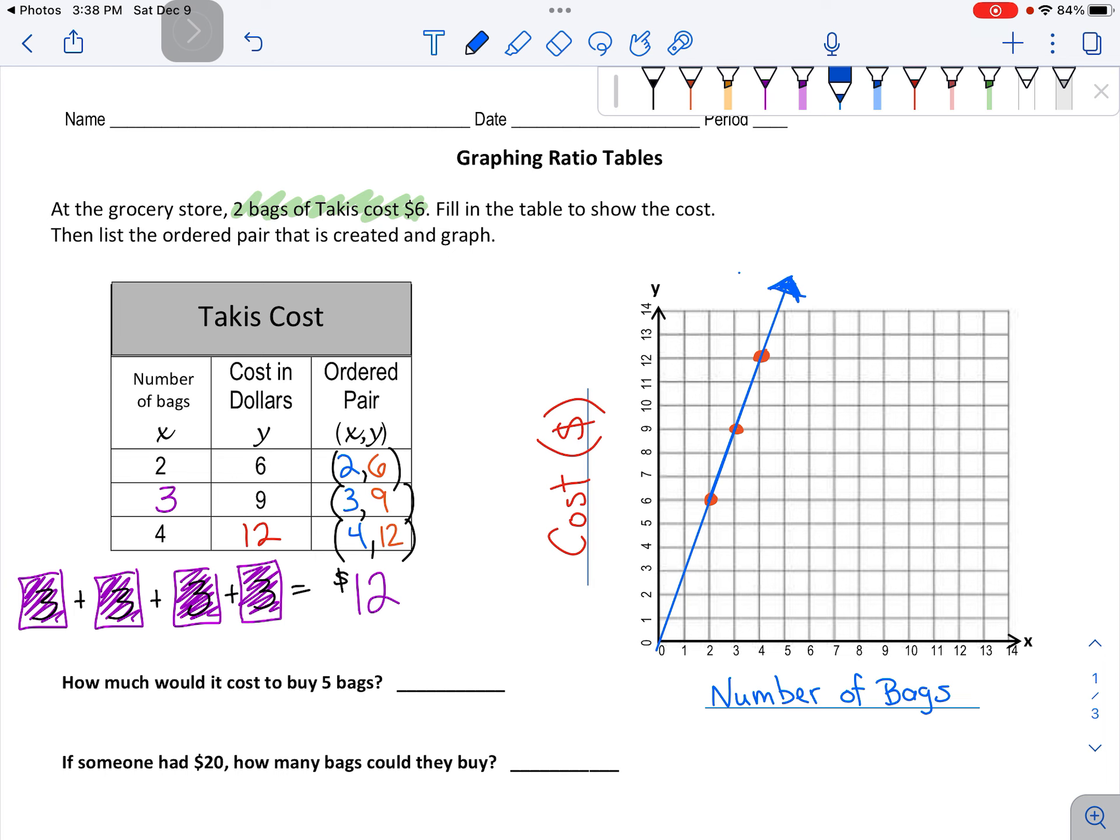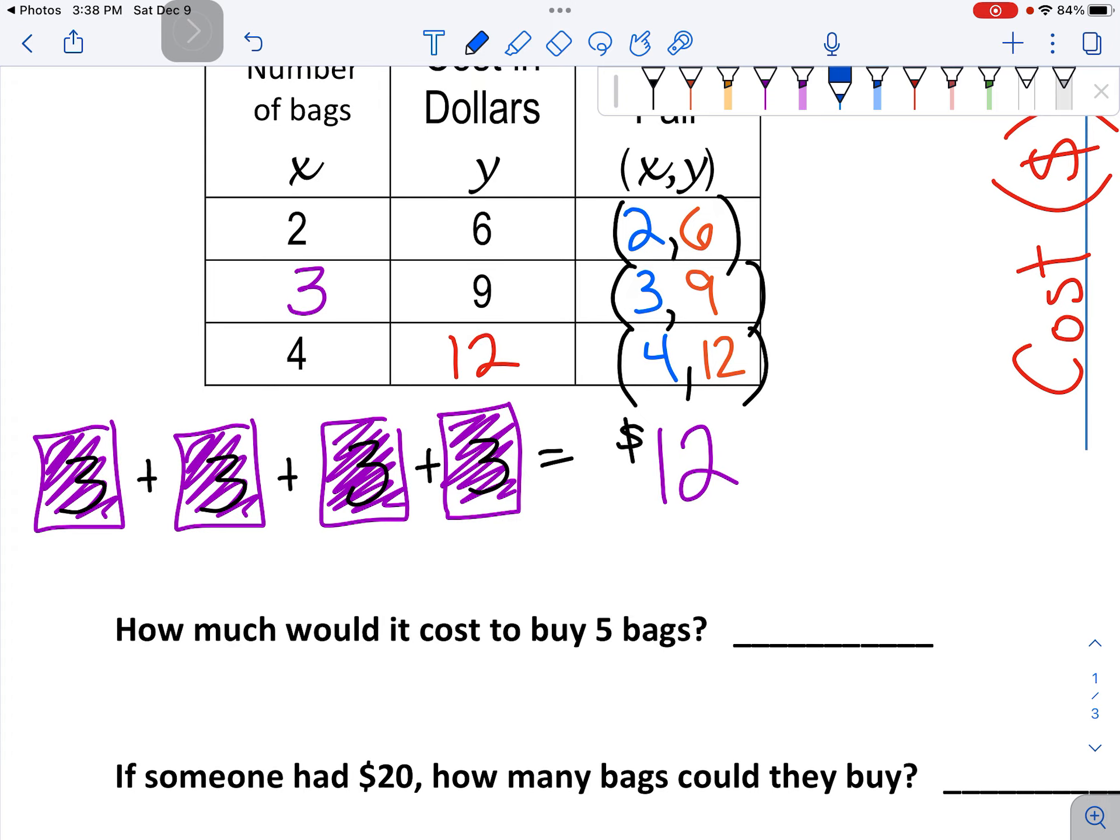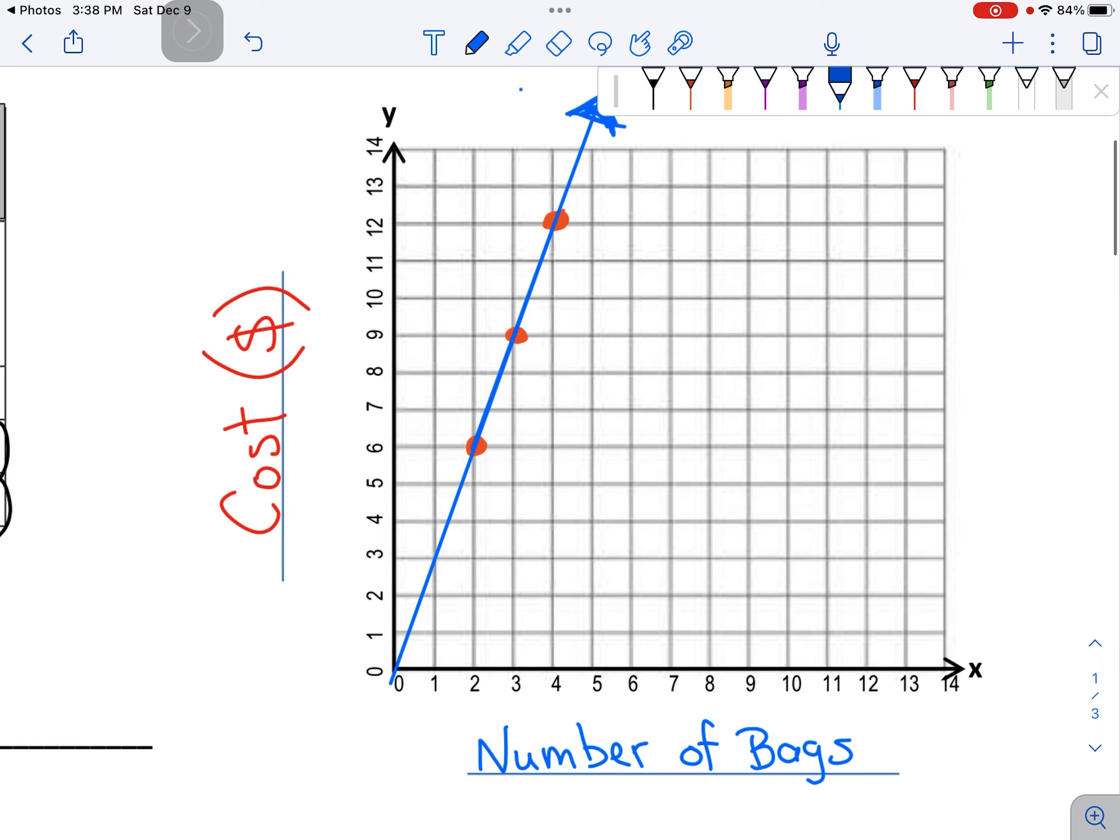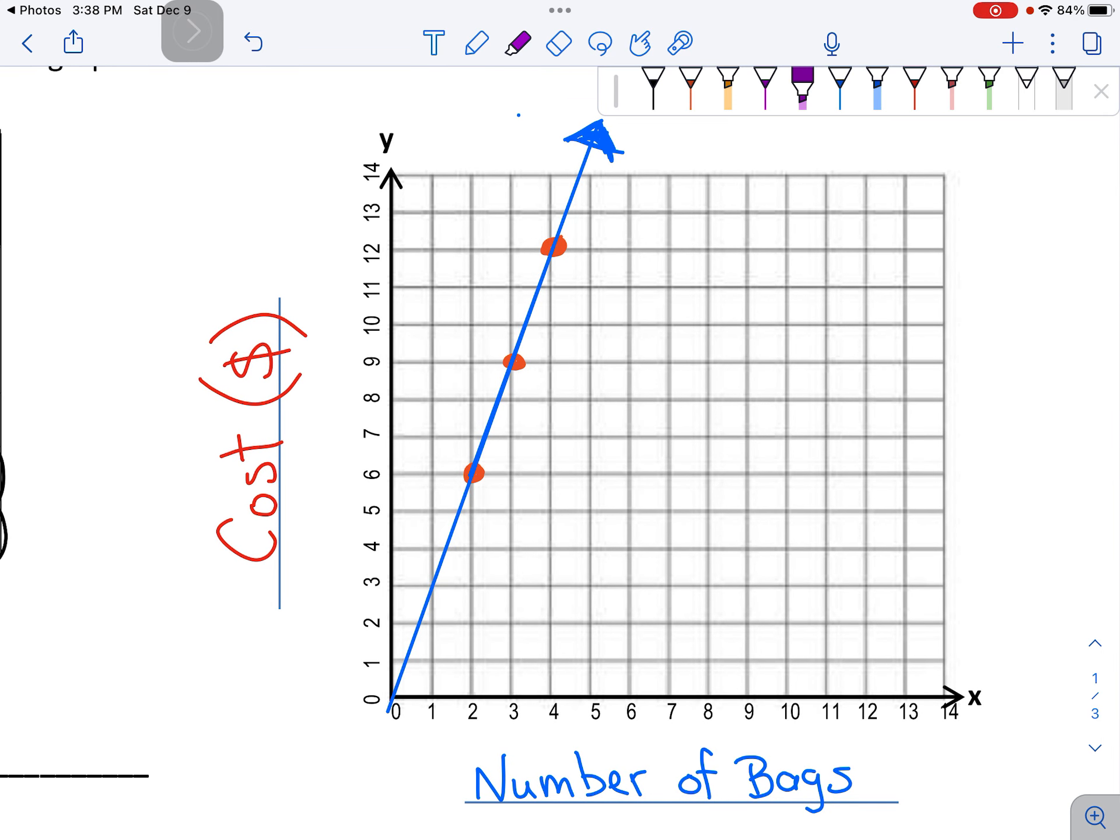We're going to answer the first question together, and then you need to answer the second question. The first question, how much would it cost to buy five bags? If we look at this graph and we find the number five, you'll see that we have a problem. Here's five. I'm going to go straight up.